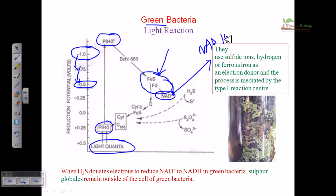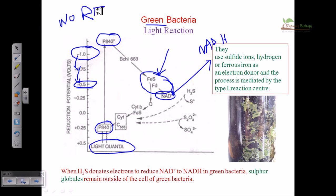In the case of purple bacteria, the quinone pool proteins cannot transfer electrons directly to NAD⁺ because their reduction potential value is in the neutral region, slightly lower than that of NAD⁺. In those cases we saw reverse electron flow occur, which is an energy-demanding process fueled by the proton motive force. But in green bacteria, no reverse electron flow is seen. This is the key difference between the green bacteria light reaction and the purple bacteria light reaction.